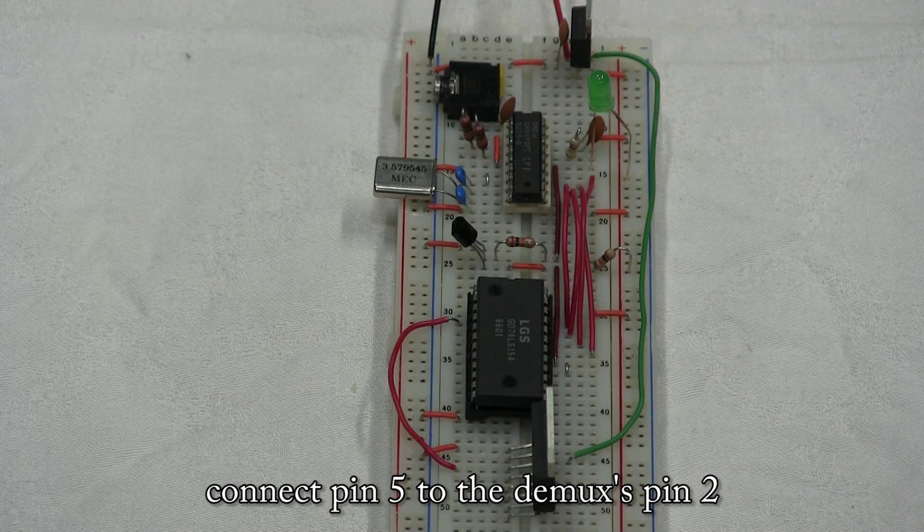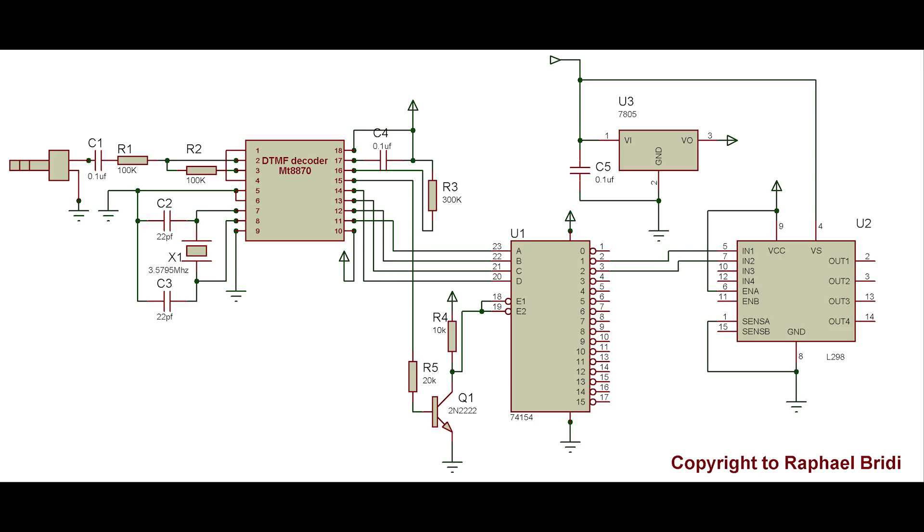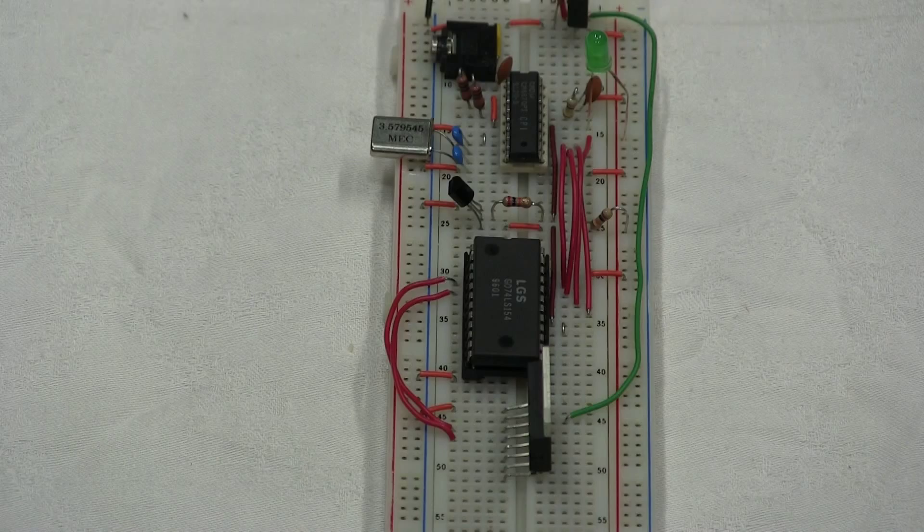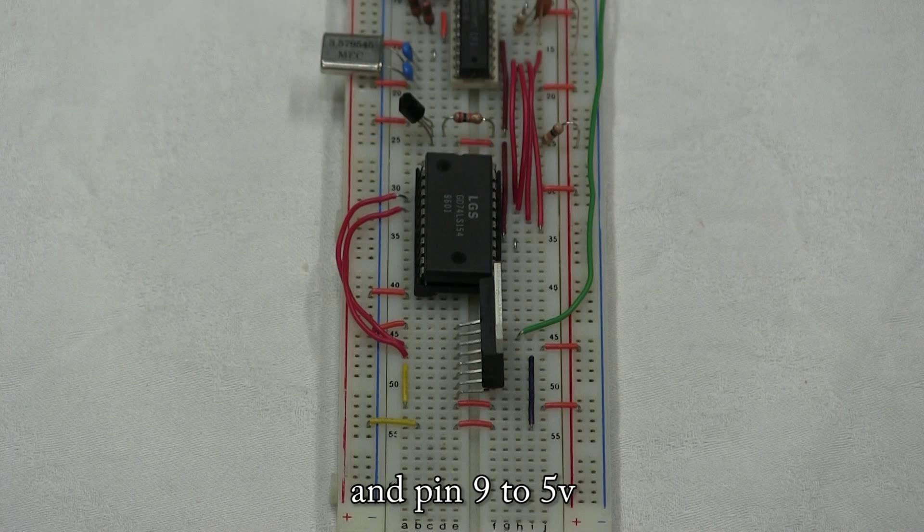Connect pin 5 to the DTMF pin 2, and pin 7 to DTMF pin 3. Relay to 5V pin 6. Ground pin 8, and pin 9 to 5V.